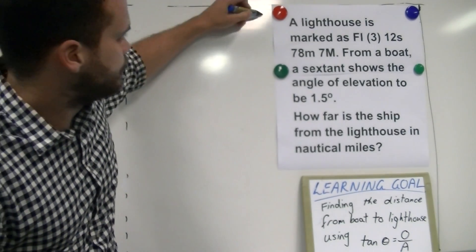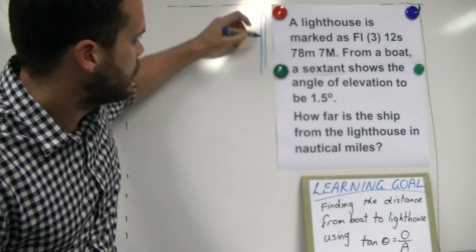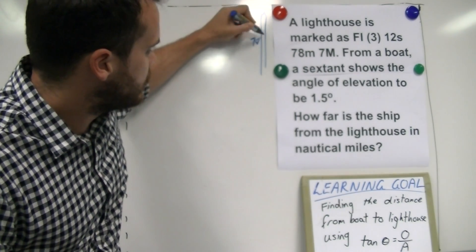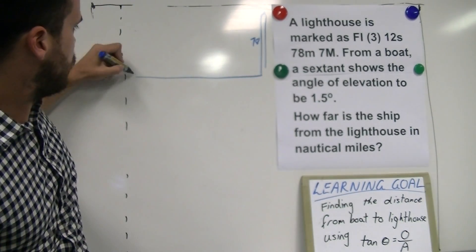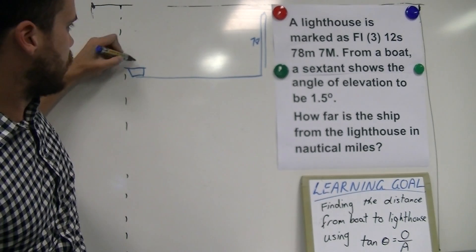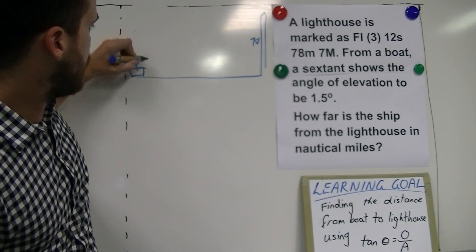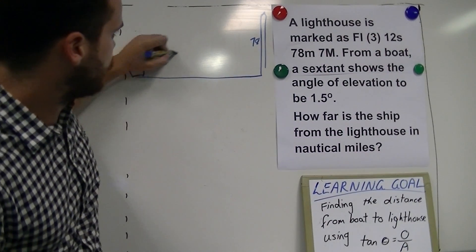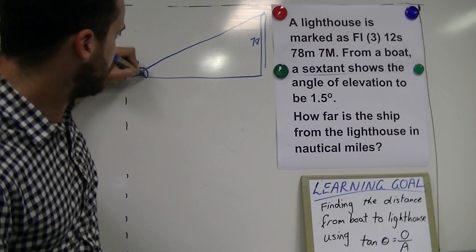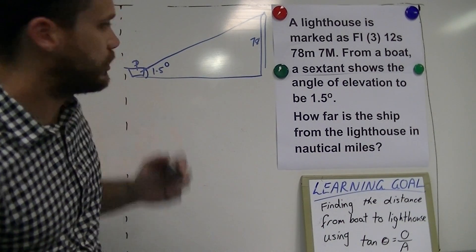Draw a quick picture of it first. You've got your lighthouse here at 78 metres. You have a boat all the way over here somewhere and the angle of elevation from the boat to the lighthouse is 1.5 degrees.